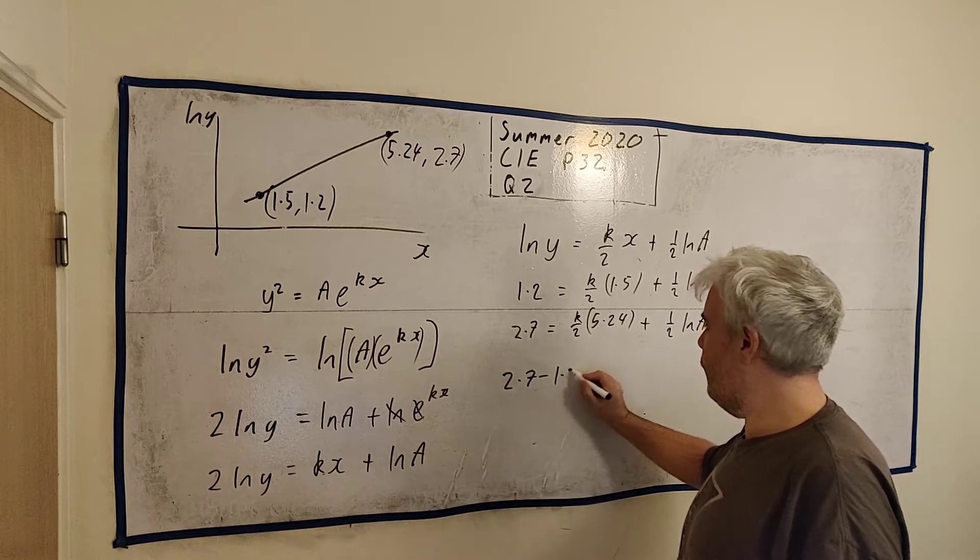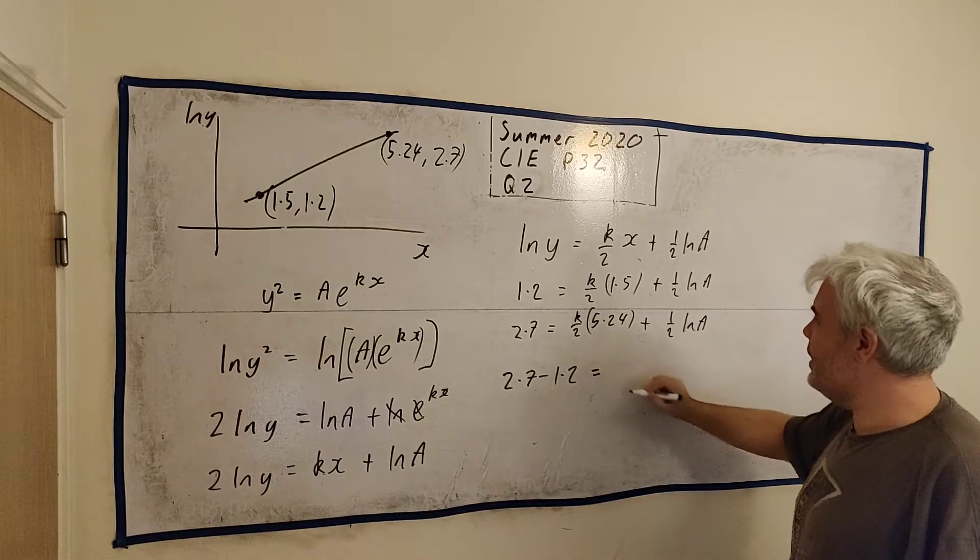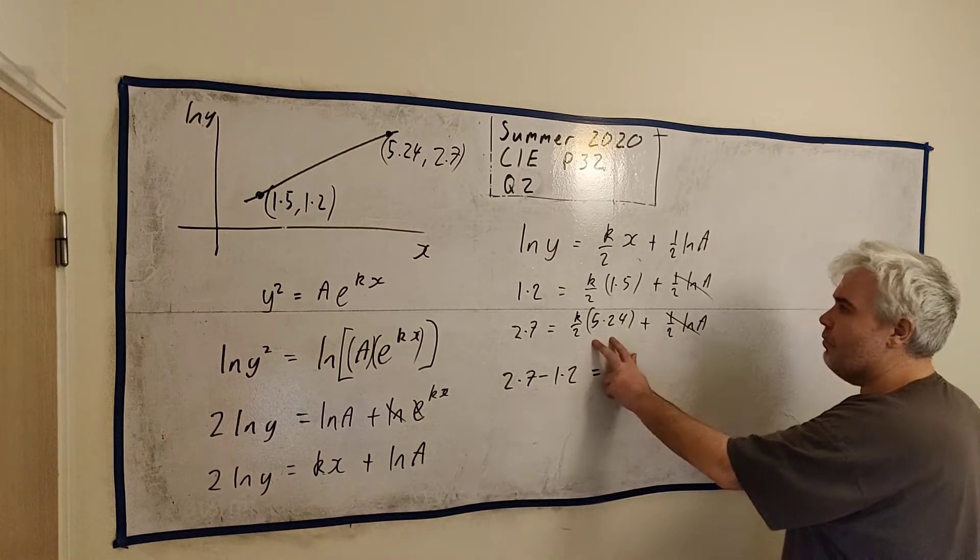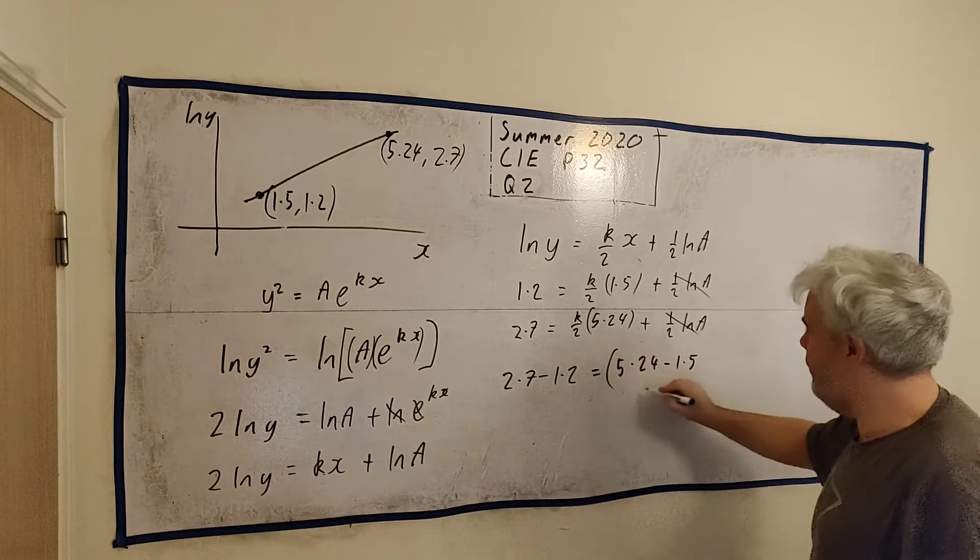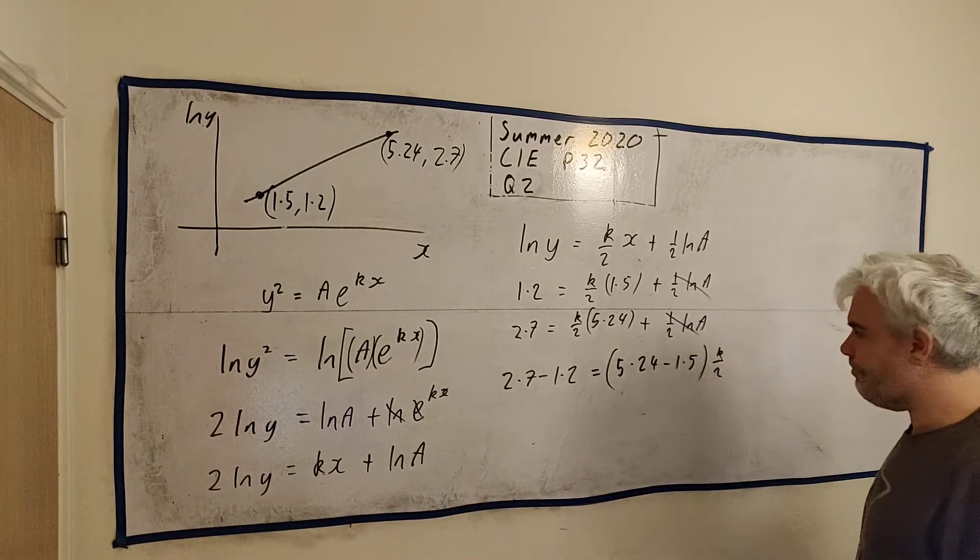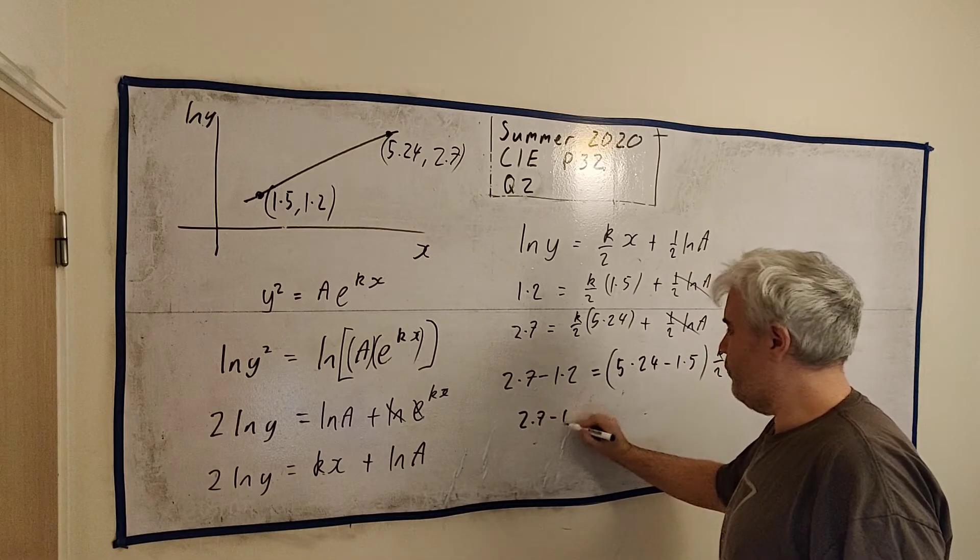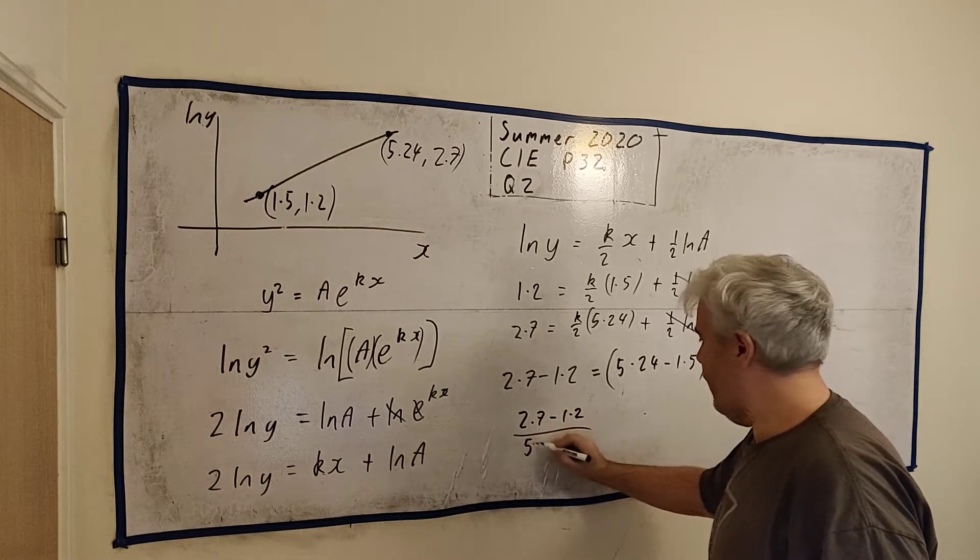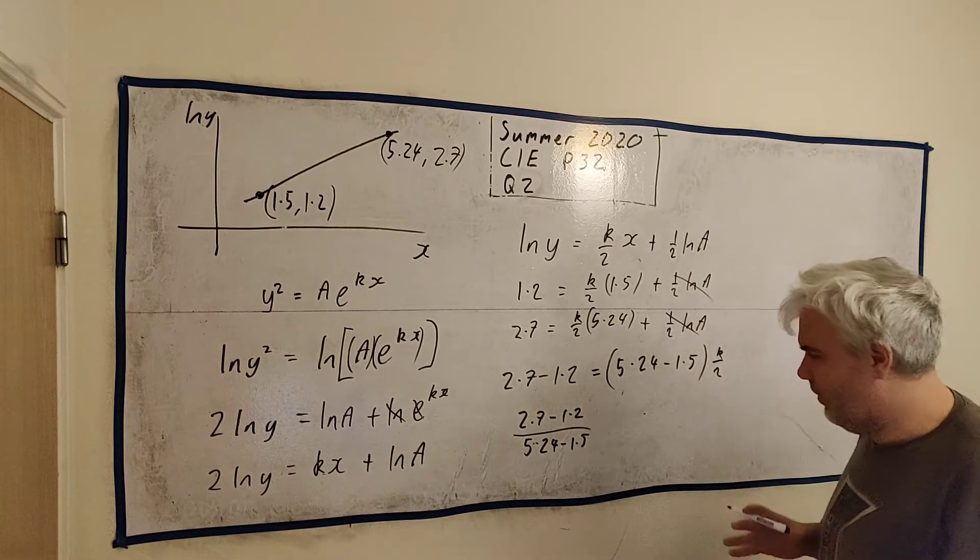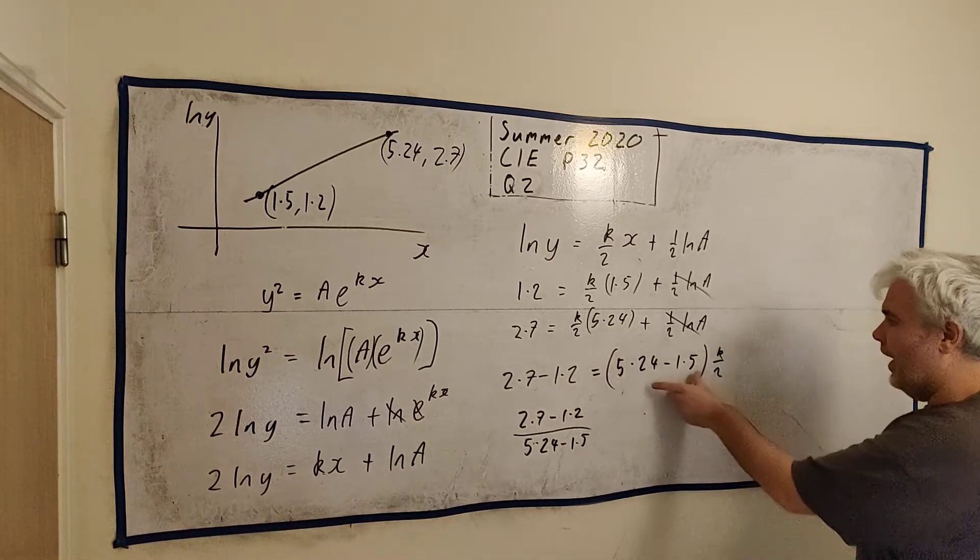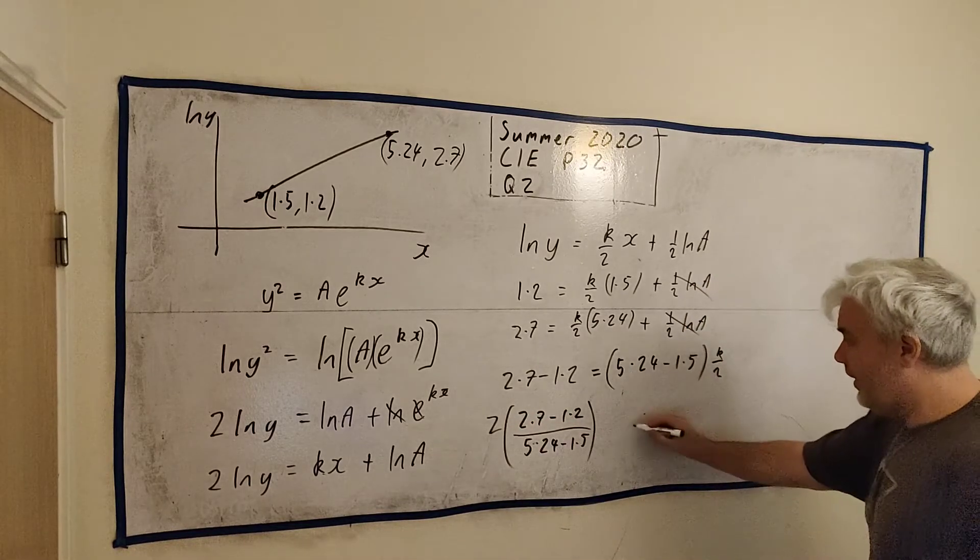So we get 2.7 minus 1.2, you can put that in the calculator if you want, I'll just keep all the numbers the way they are, is equal to, well that goes with that, and this one minus this, these are the same thing here, so it's just 5.24 minus 1.5 multiplied by k over 2. Let's just rearrange all this. Divide this bracket over here, so we get 2.7 minus 1.2 divided by 5.24 minus 1.5. I know lots of people would have just put this in a calculator by now, which is fine, but I just find it's easier this way. So I divide it by this bracket and I'll multiply by this 2. So let's put it all down in a bracket and we multiply by 2, and that's equal to k.